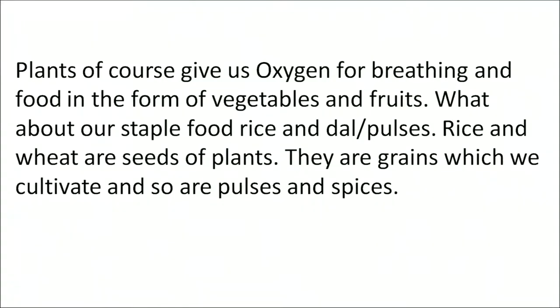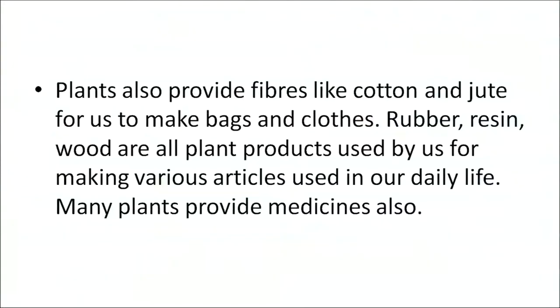Plants give us oxygen for breathing and food in the form of vegetables and fruits. Our staple foods — rice, dal, and wheat — are seeds of plants. Pulses and spices are also cultivated. Plants also provide fibres like cotton and jute for making bags and clothes. Rubber, resin, and wood are plant products used in daily life, and many plants provide medicines. Animals also help humans in many ways: cattle give milk and meat, poultry gives meat and eggs, fish, prawns, and crabs are eaten. Draft animals like mules, oxen, camel, horse, and elephants transport materials. Some beetles give medicines, silk moths give silk, and sheep give wool.